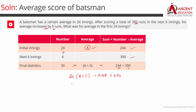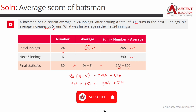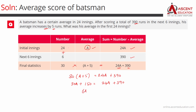Expanding the left-hand side: 30A plus 150 equals 24A plus 390. Taking 24A to the left and 150 to the right: 30A minus 24A equals 6A, and 390 minus 150 equals 240. So A equals 240 divided by 6, which is 40.